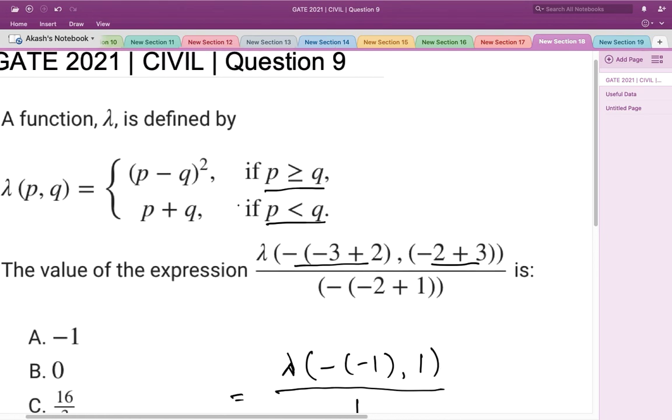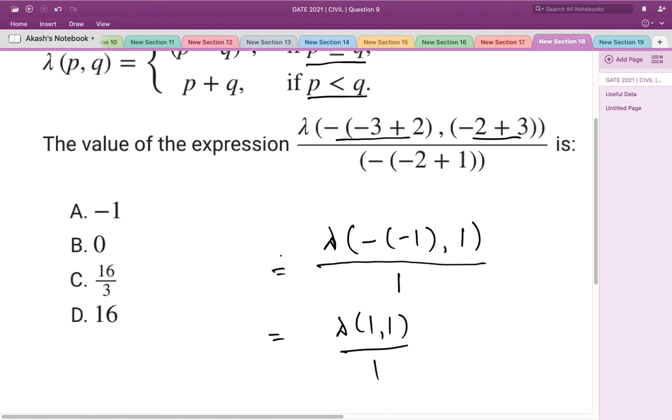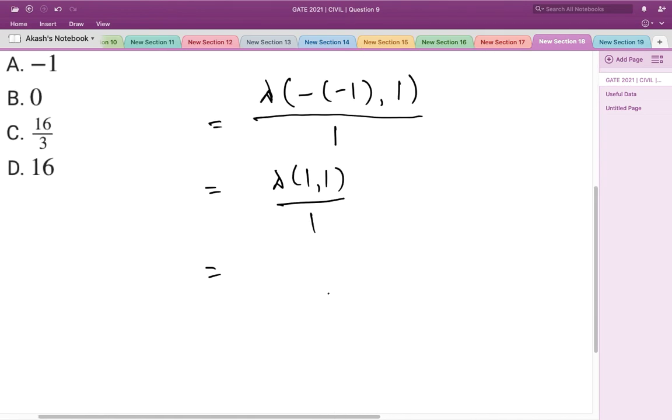According to the definition, if p≥q, we use the first definition which is (p-q)². So this would be (1-1)² divided by 1.